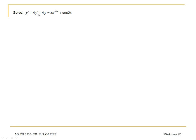On this second-order ODE, notice that the function on the right side contains two terms. We'll start by finding the complementary solution, or the solution that corresponds to y double prime plus 4y prime plus 4y is equal to 0.